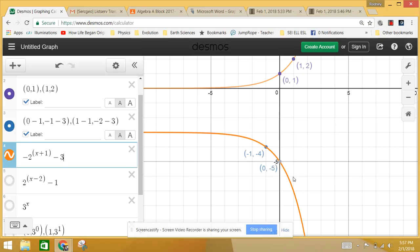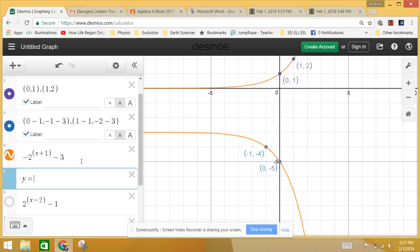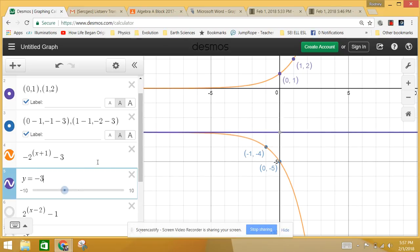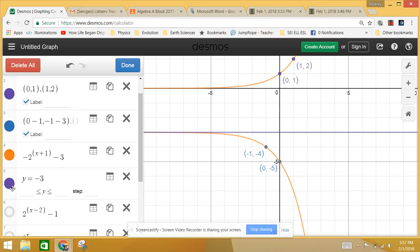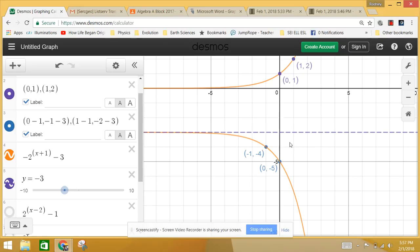And now, you might notice, this looks like it has an asymptote at y equals three. I mean, y equals, sorry, y equals negative three. And it does. This is our asymptote. I'll make it dashed because asymptotes really ought to be dashed.